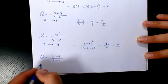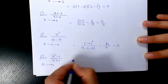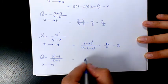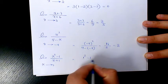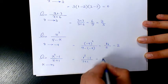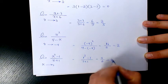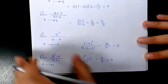Next one: the limit of (x squared minus 1) over (x plus 1) when x is approaching 1. It's going to be (1 squared minus 1) over (1 plus 1), which is 0 over 2, equal to 0.